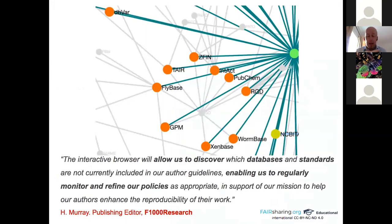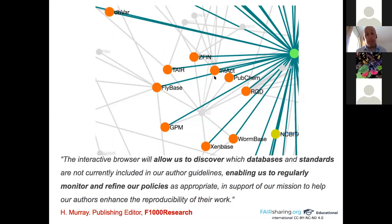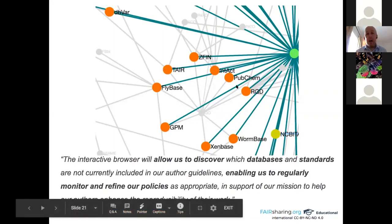Here's an astronomy example — a collection of standards where you can see different types on the legend and how they relate to each other. This is useful for seeing visually and quickly whether a standard is well adopted by the number of relationships it has. This interactive browser is also useful for policy makers — for example, Holly Murray from F1000 Research used it to see that the resources they recommend all use the Gene Ontology in gray, which isn't currently recommended by F1000. She could then decide to add the Gene Ontology to their recommendations.